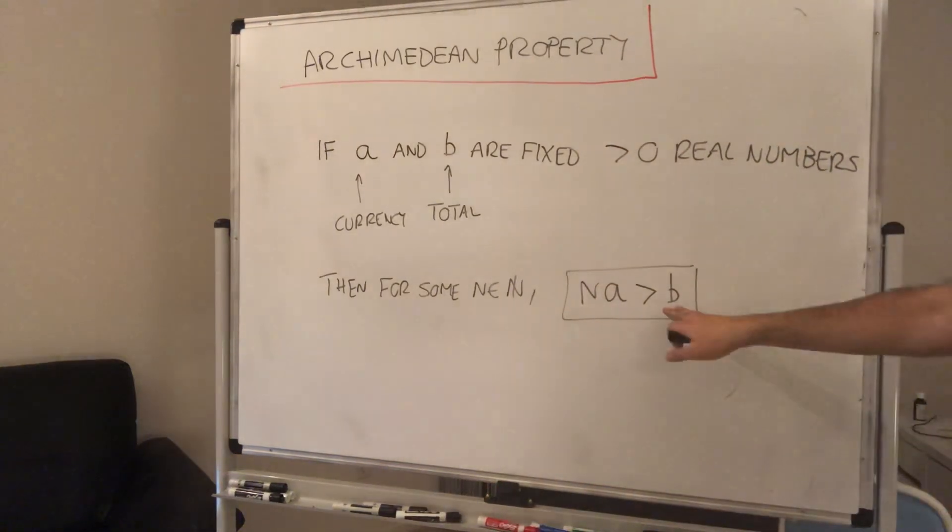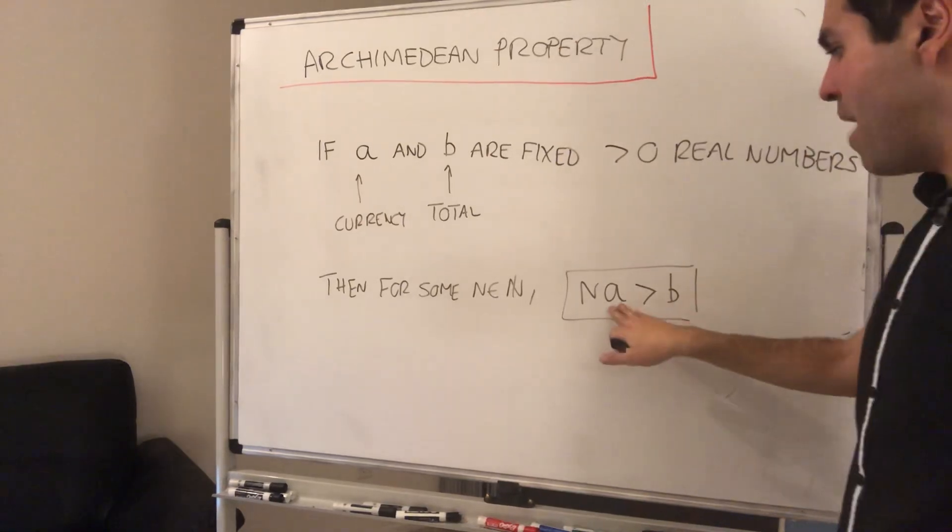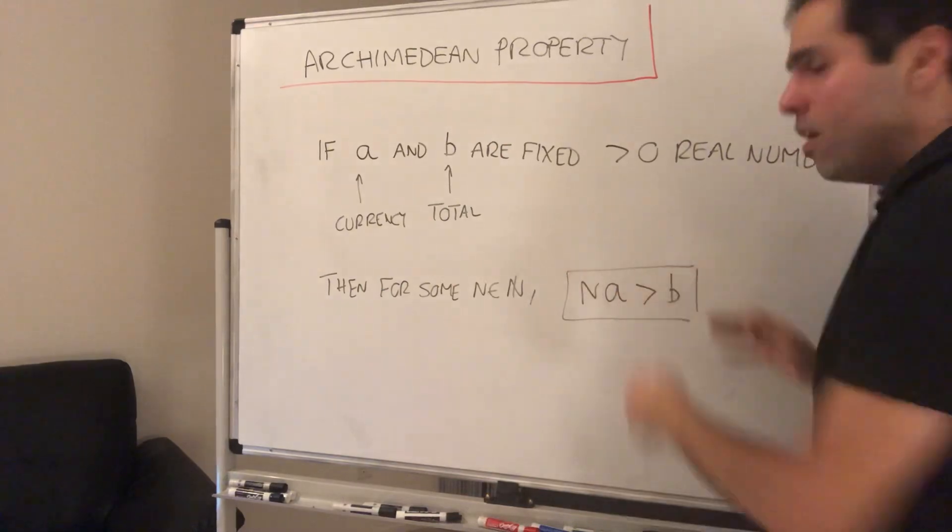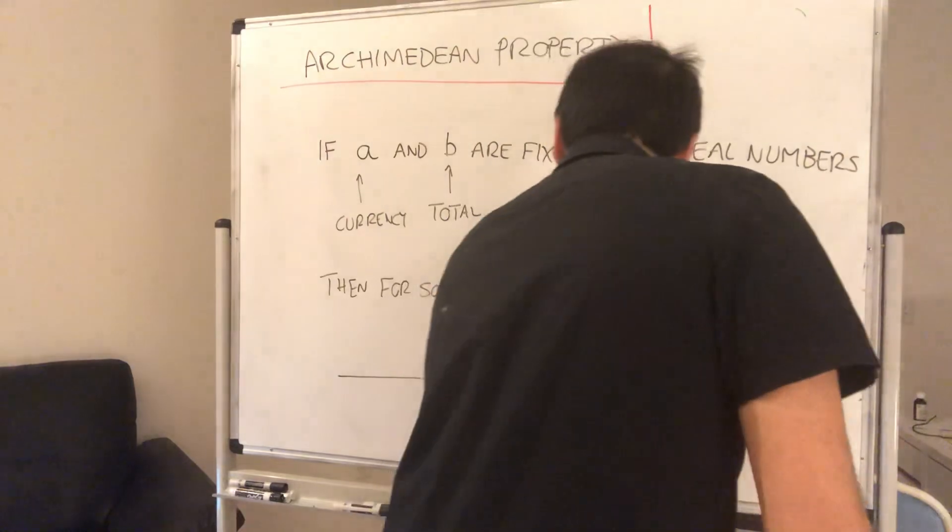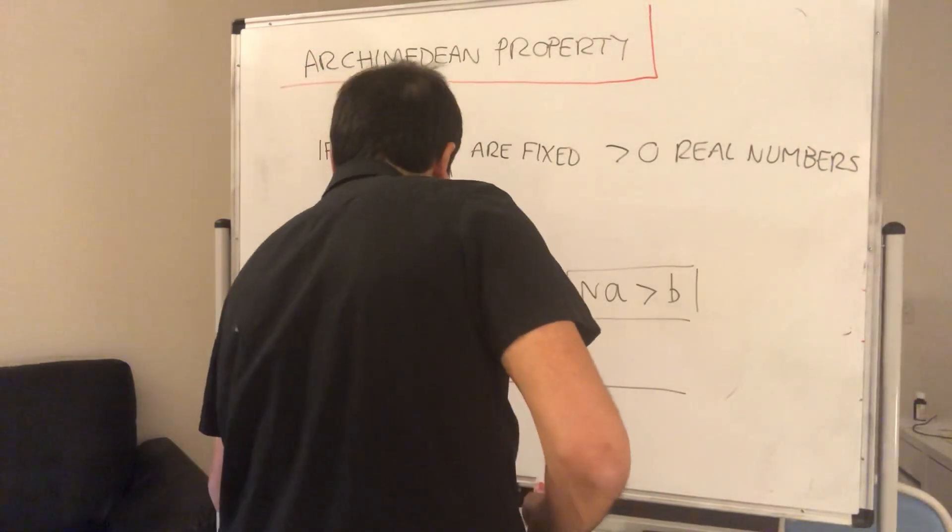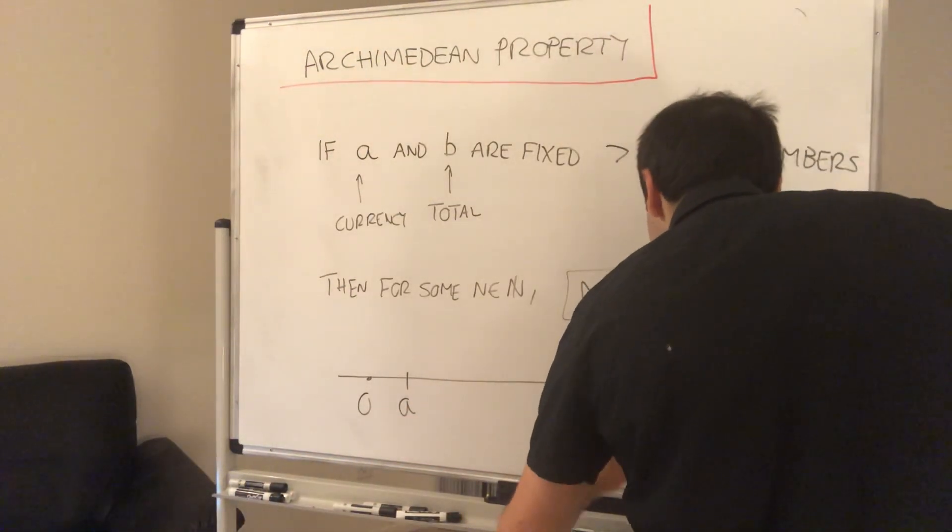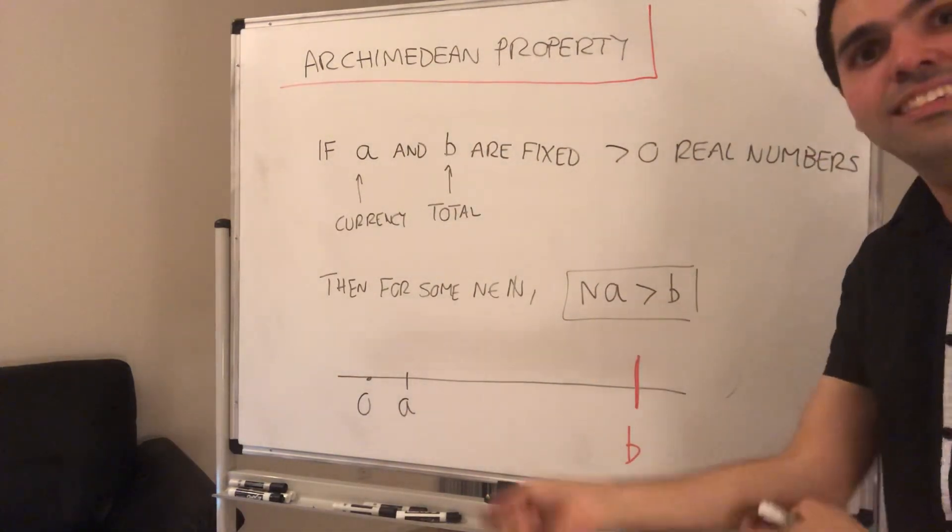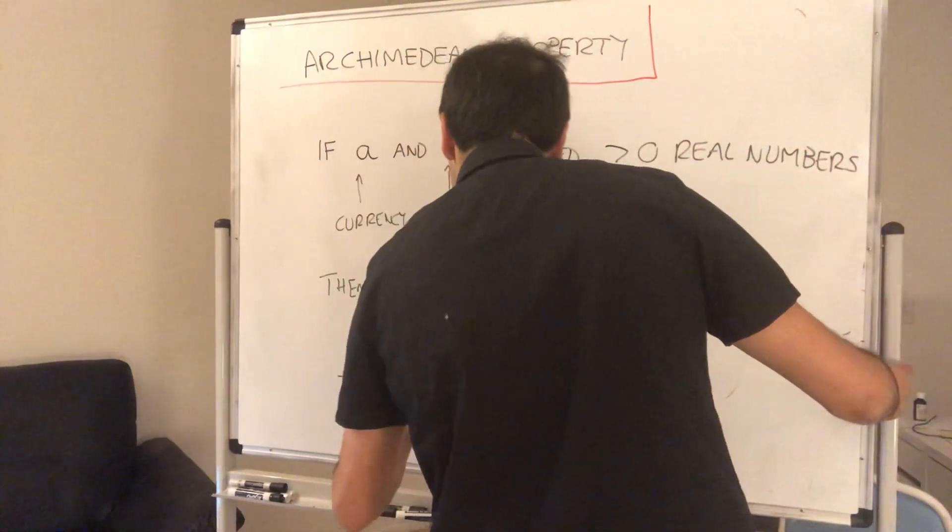What this is saying is no matter how big your total is and no matter how small your currency is, you can eventually pay that total bill. And if you want there's a picture. Suppose this is zero and this is your currency A which is small, and suppose I give you a very big number here B, then you can eventually exceed that number B.